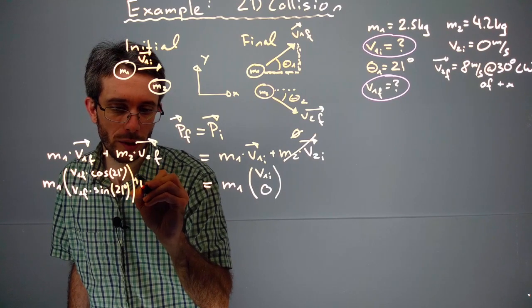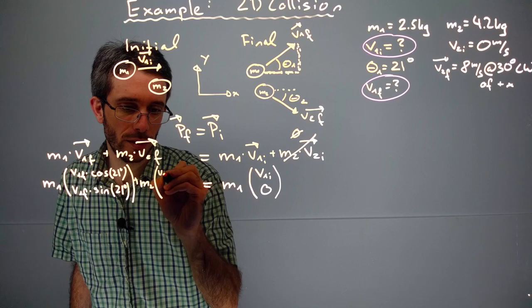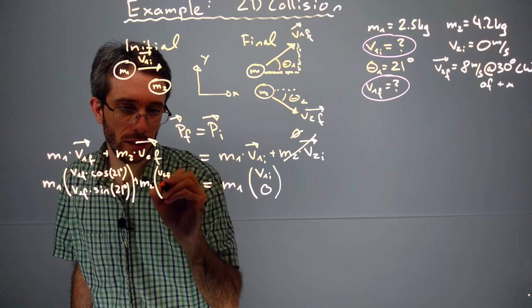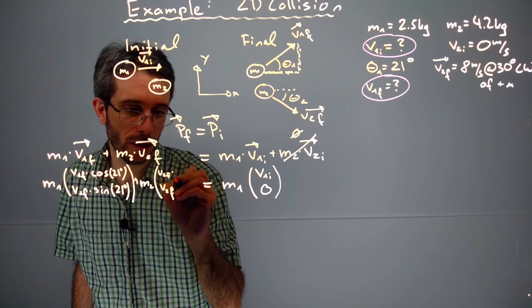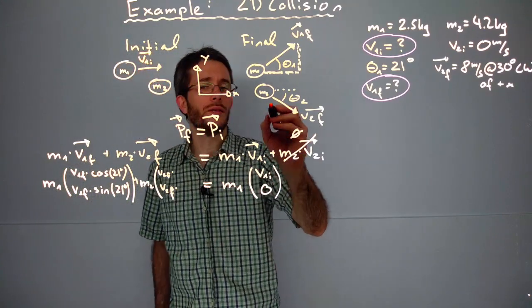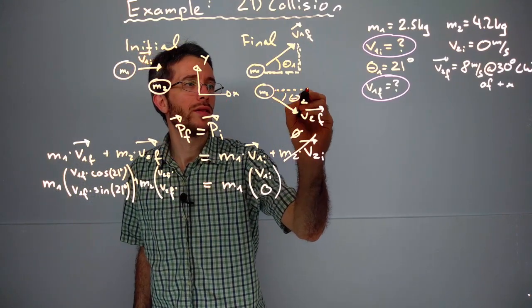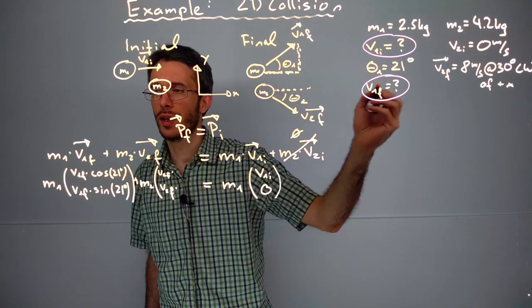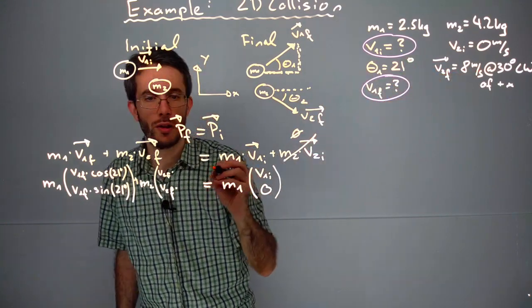And then for m2 we have v2 final. In x we have cosine of theta 2, so cosine of 30.